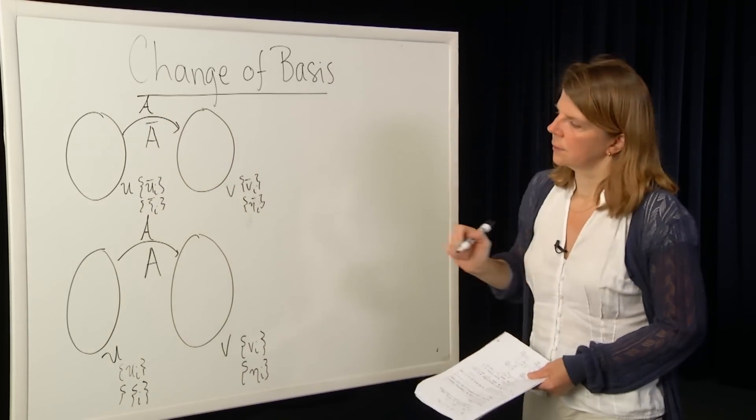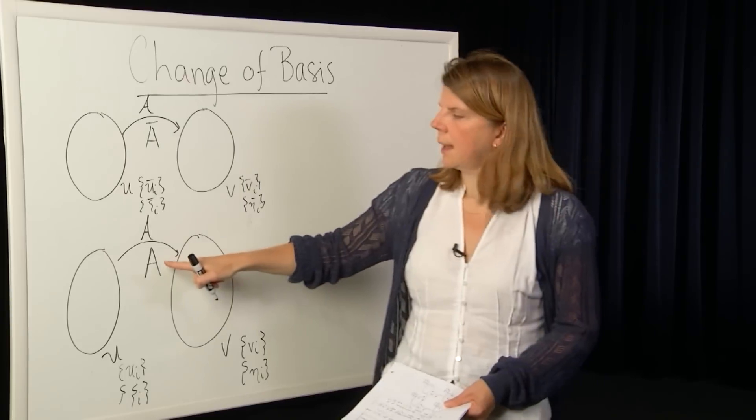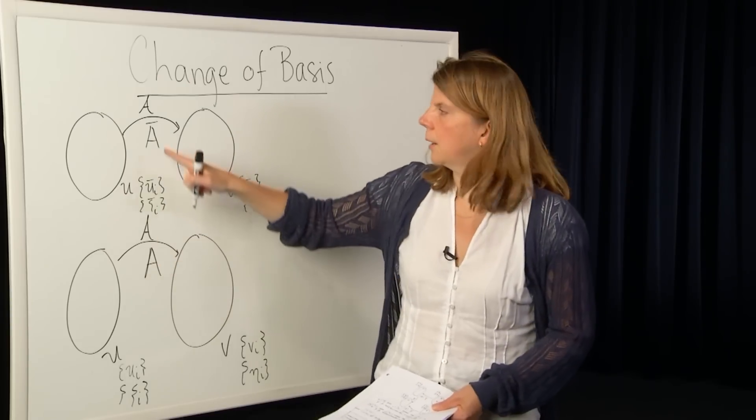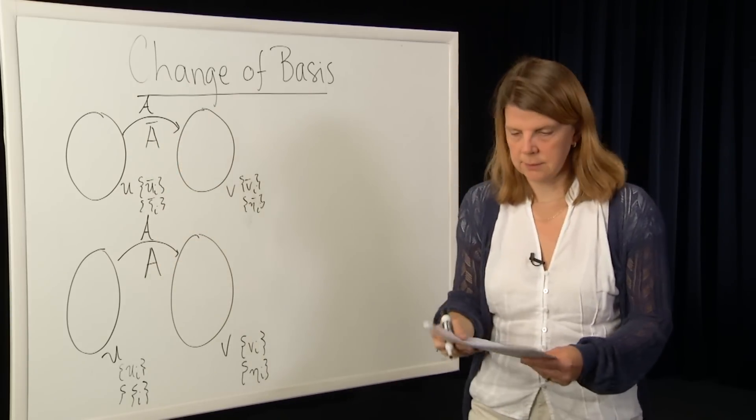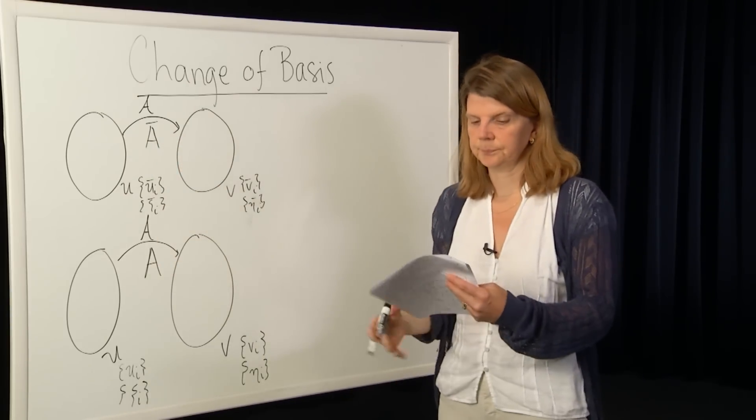Now let's think about different basis vectors for those same spaces. We'll use Ui bar to represent the basis elements of U and xi bar to be the corresponding coordinates, and Vi bar and eta i bar for the co-domain. We'll call the matrix representation of the linear map A with respect to these basis elements capital A bar. So given A, how do we construct A bar directly? That's the question.